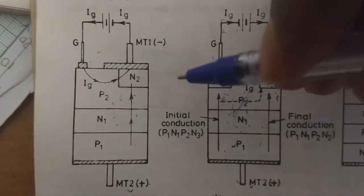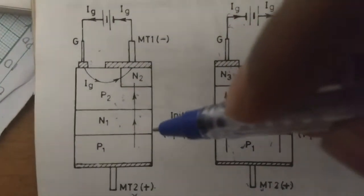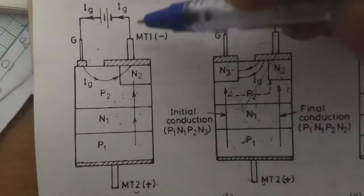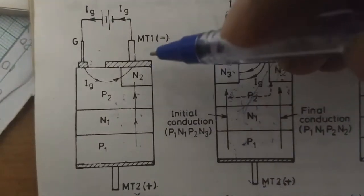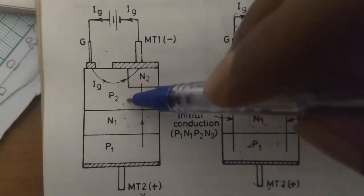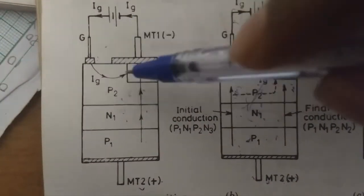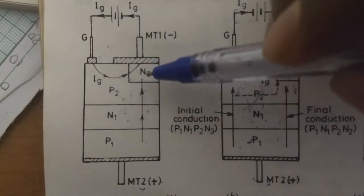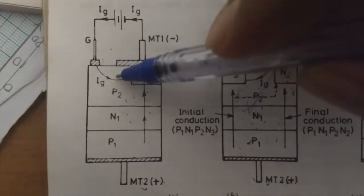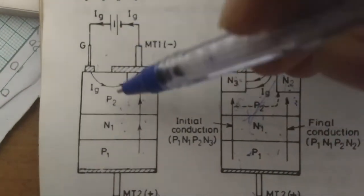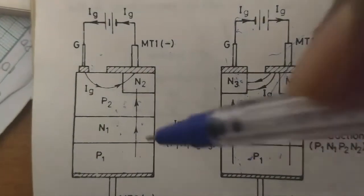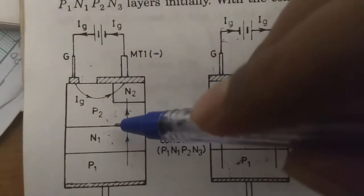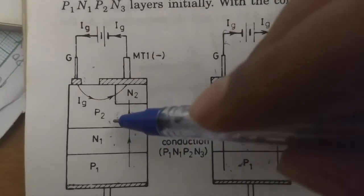We will examine the junctions. P1 and N1 are forward biased as MT2 is positive and MT1 is negative. P2 and N2 are also forward biased, but junction N1-P2 is reverse biased. As the gate is positive with respect to MT1, the gate current will flow through the P2-N2 region, and this gate current injects a lot of charge carriers into the P2 region.